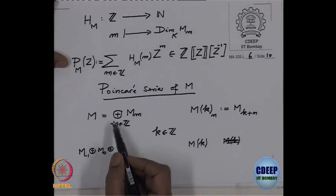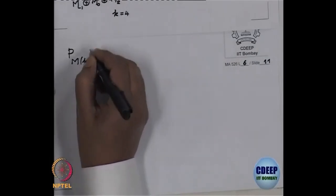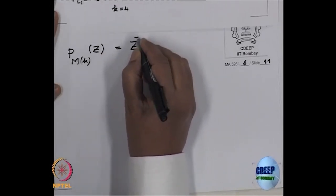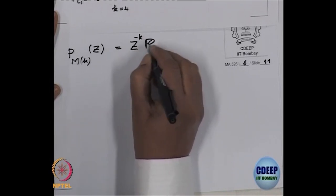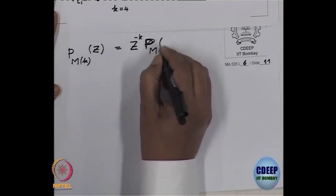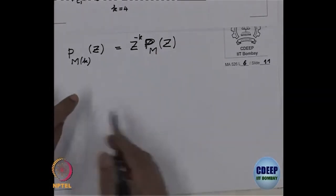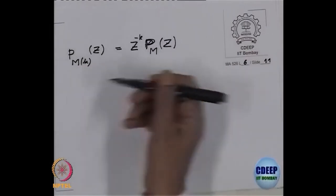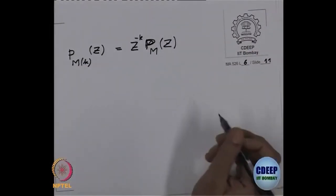Okay, so the obvious question is what is the relation between the Poincaré series here and Poincaré series there. Obviously, the Poincaré series of M(K) is Z^{-K} times P_M. This is obvious. We just have to shift the dimension to the other side, left side.